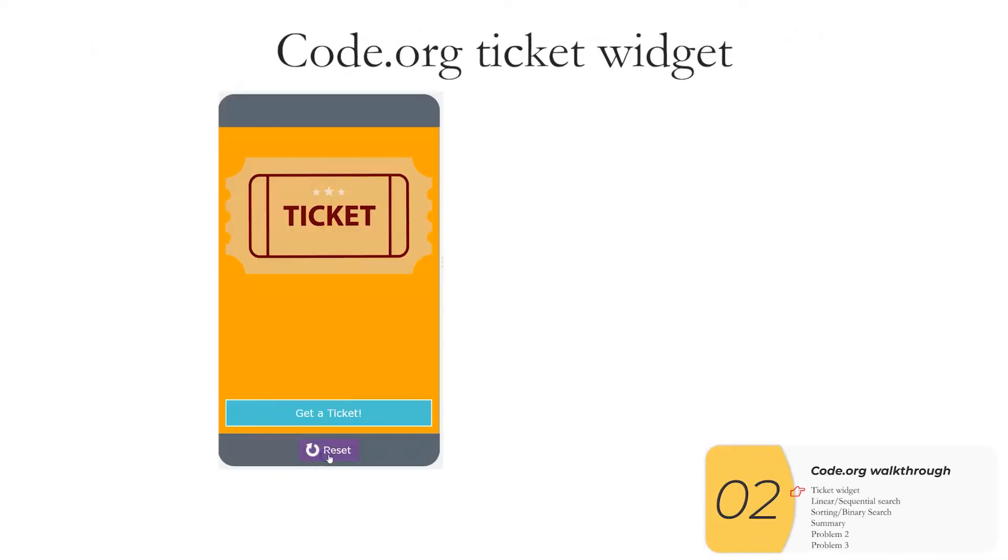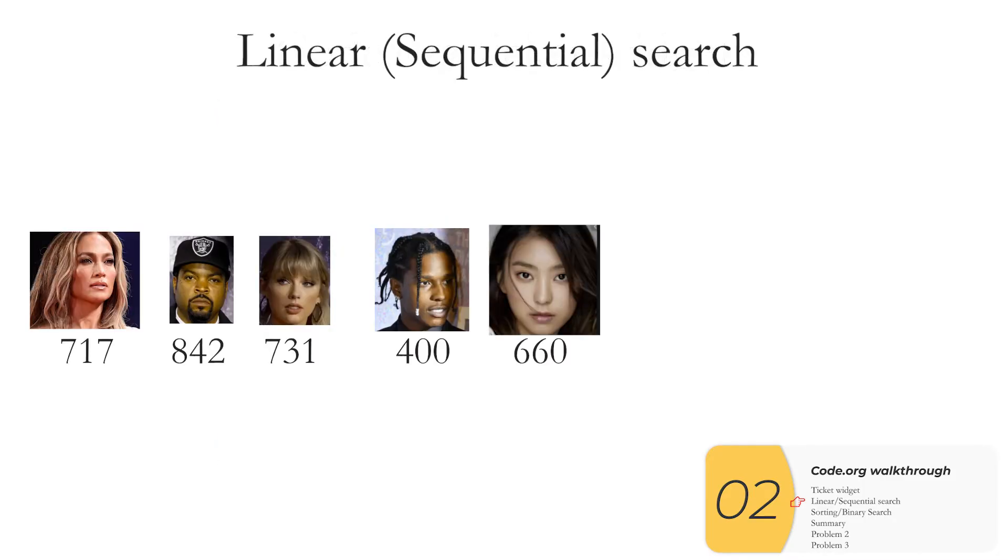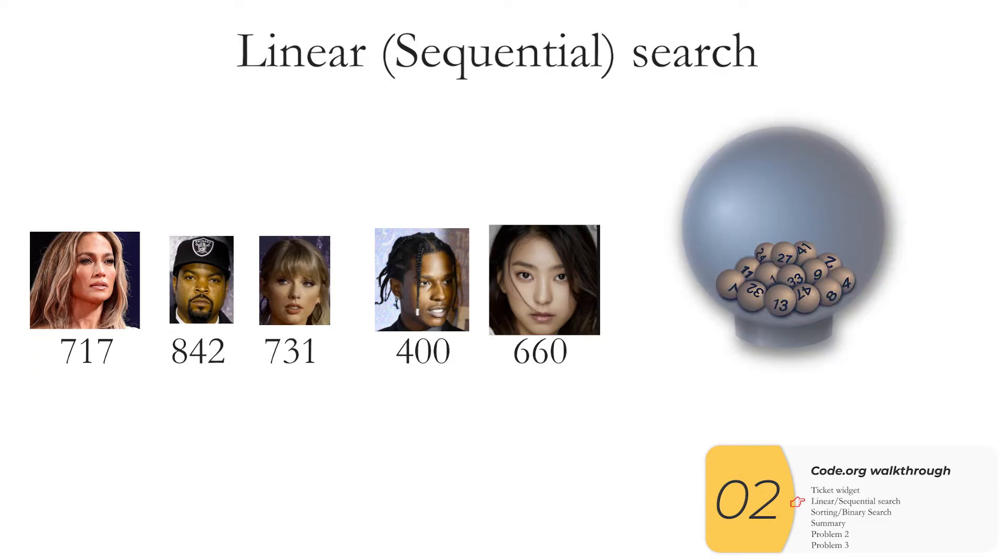So we start with the code.org widget. It's a ticket generator and the idea is that you give a ticket to each student in the class. So here is my class, my fake class. They all have numbers and I'm going to run a lottery where I pick a number and one of them is going to win.